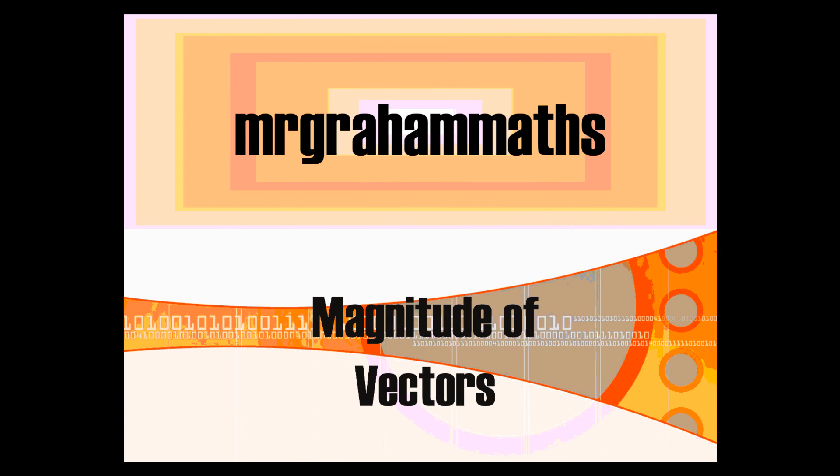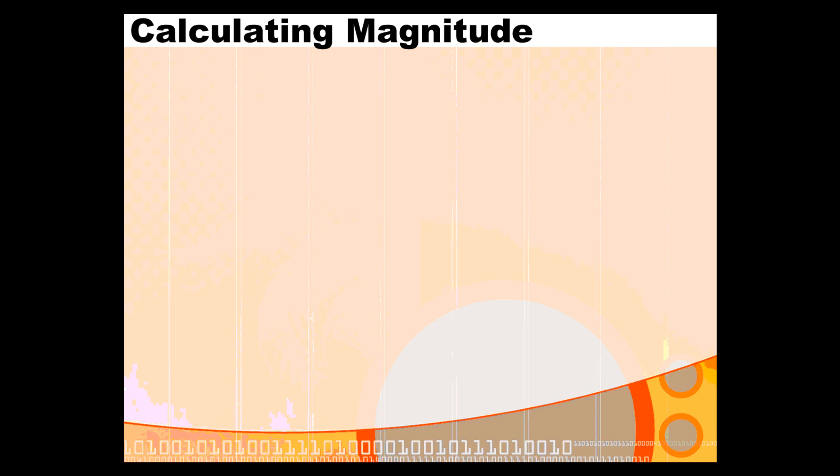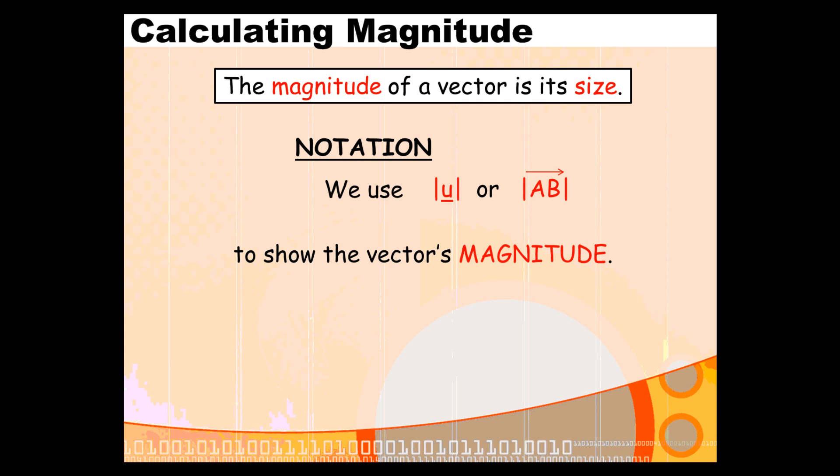In this video, we're going to have a look at what is meant by the magnitude of a vector. A vector's magnitude is just its size, and there are two ways that we use to show that we're talking about a vector's size.